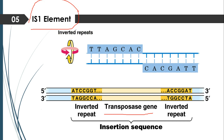Insertion sequences contain two regions: the first is the inverted repeat region at both sides, and the second is the transposase gene. The transposase gene is responsible for encoding the enzyme known as transposase. Transposase enzyme is responsible for the transposition of the insertion sequences.